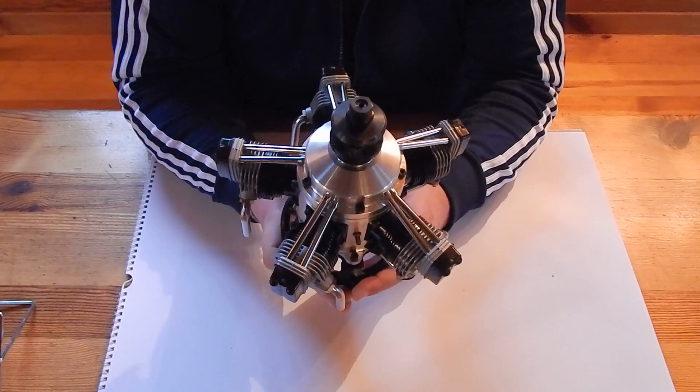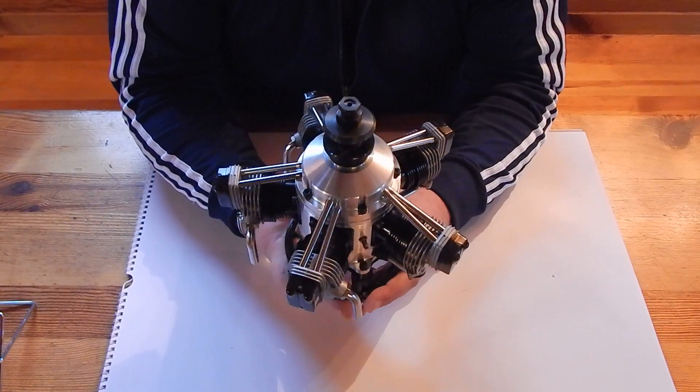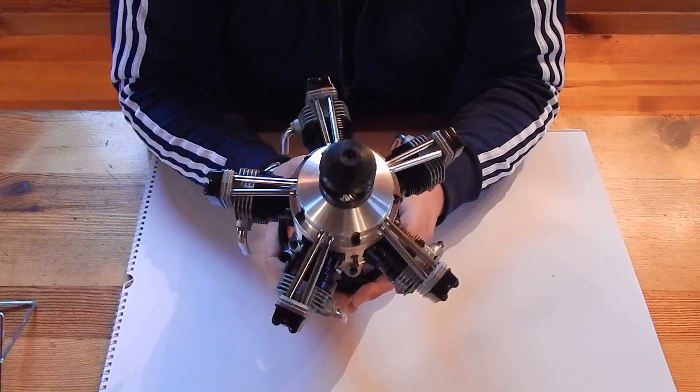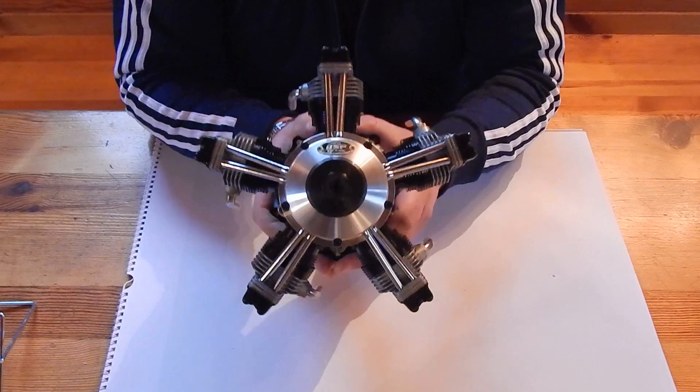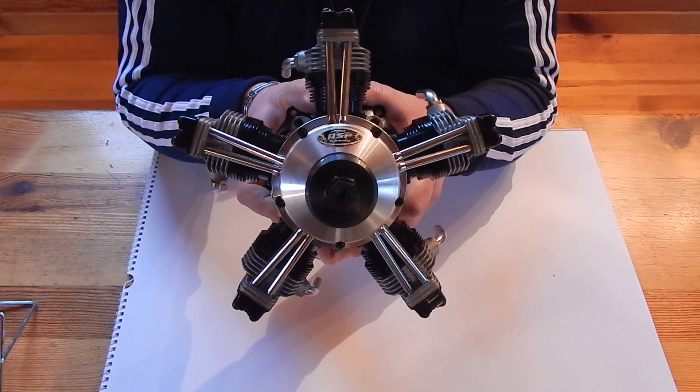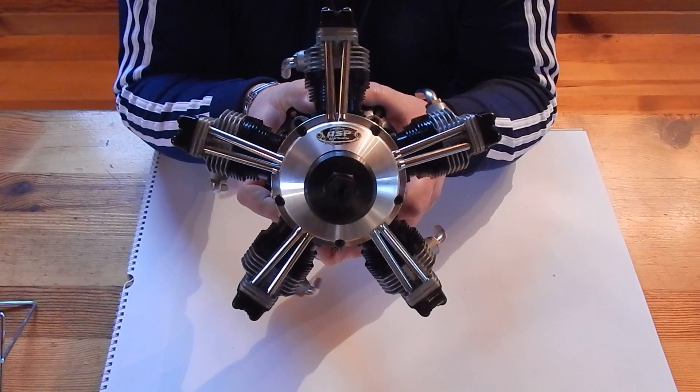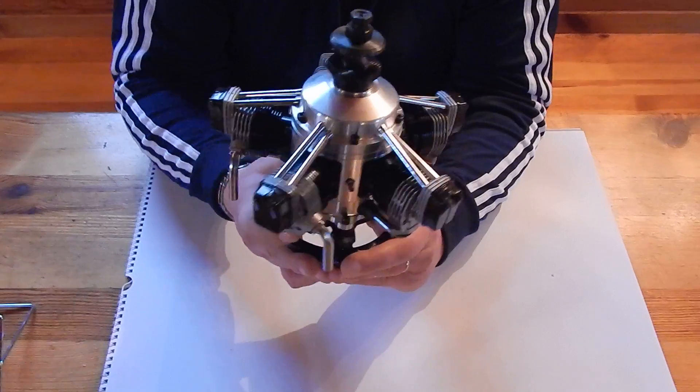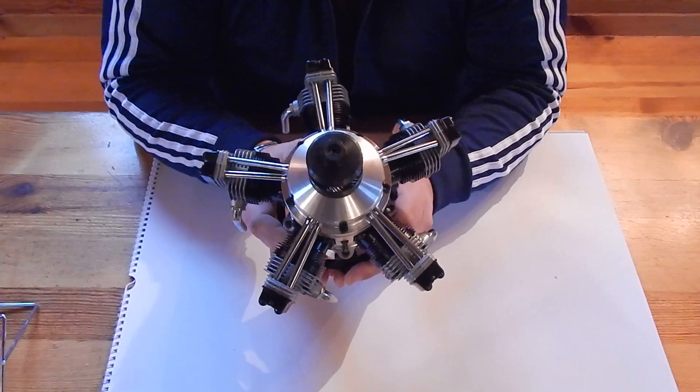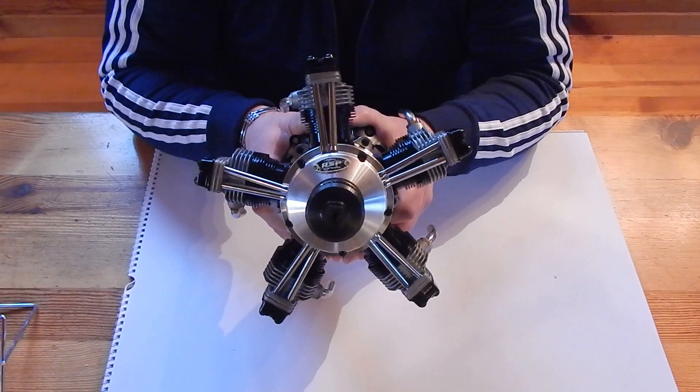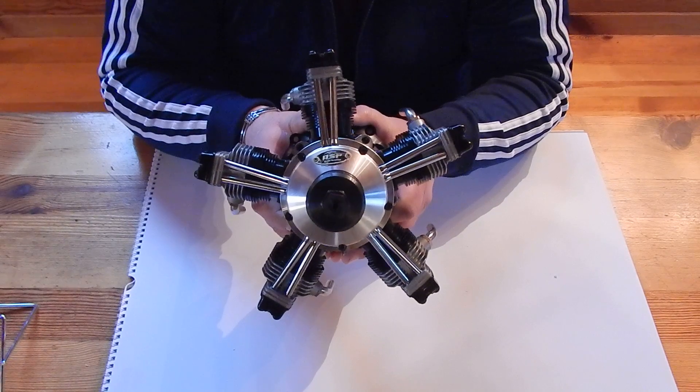Maybe later I will put this engine, or maybe another, on a Thunderbolt or Razorback or something like this. But for the start I will put this on, like I said, Lysander Westland 3 meter wingspan.